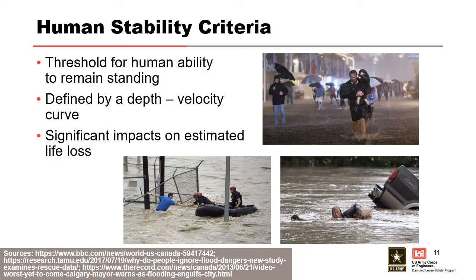Moving on to human stability criteria. We do the same thing — we develop thresholds and functions for human stability, also defined by depth and velocity, and this can have a significant impact on life loss. In one image from Hurricane Ida, a man is carrying his child through water with people not too worried about the hazard. In another, a man is in deep water with some velocity, clinging on awaiting rescue. And in the last, a man's truck is going underwater and he is swimming — the stability of all these individuals is very different.